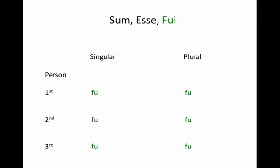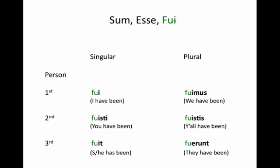And to this stem, we add the same exact endings: i, isti, it, imus, istis, erunt. So sum, essay, phooey in the perfect tense of the active indicative is in fact regular, unlike all of its other forms. Our meanings here: fuui is 'I have been,' fuuisti 'you have been,' fuuit 'he, she, or it has been,' fuuimus 'we have been,' fuuistis 'y'all have been,' fuuerunt 'they have been.'